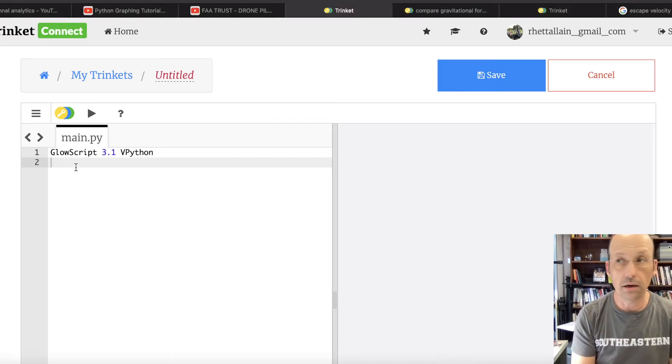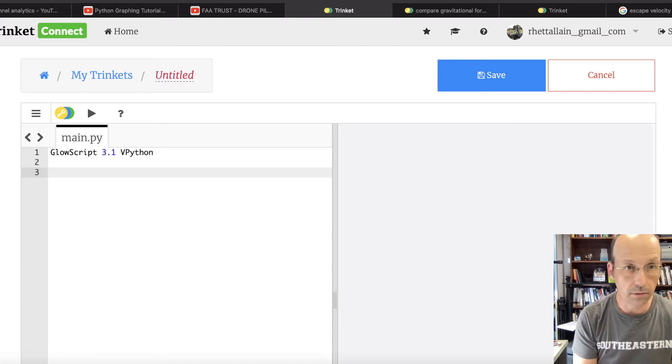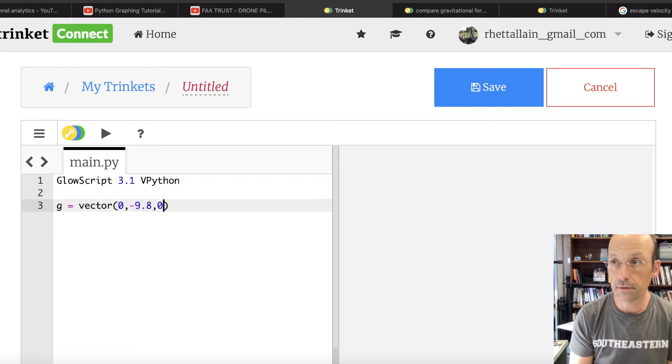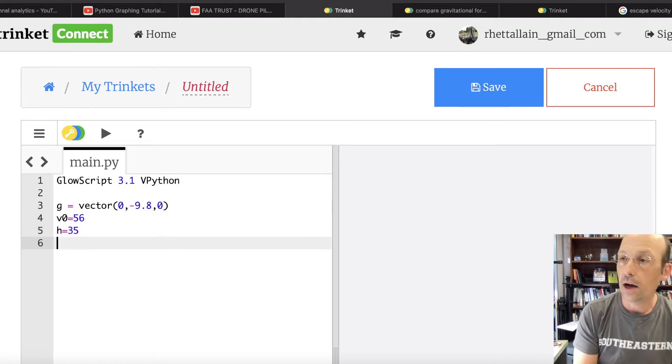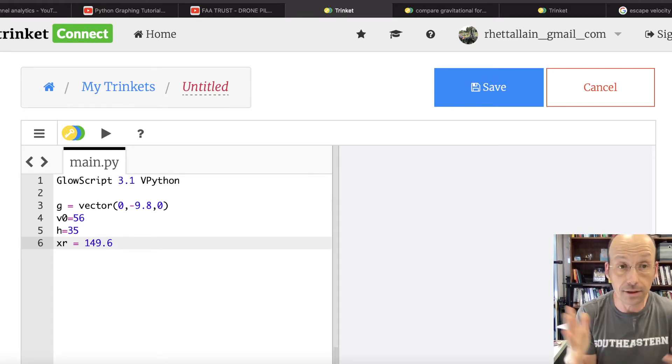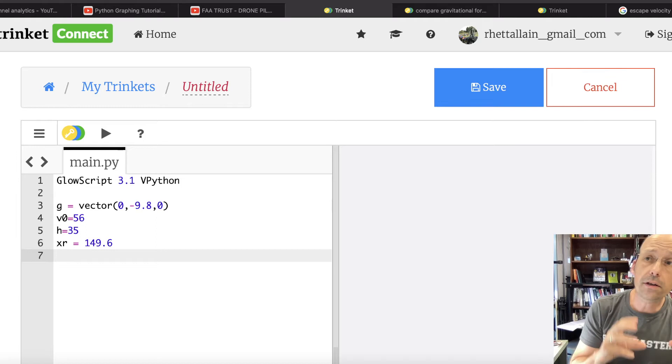So I'm going to start off with some things here. Let's put g equals vector 0, negative 9.8, 0. Let's see. Is that big enough? There. And I need to put my other parameters. Let's say v0 equals 56, h equals 35. And I'm going to go ahead and put my x value. I'm going to call it xr for the range. It's 149.6. And that's just going to be used by me to kind of set things up. I want to make four objects. I'm going to make the ground, the person, the plane, and the package.